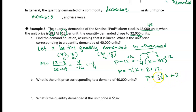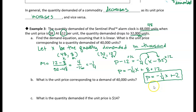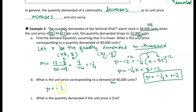That's our demand curve, which gives us the price for a given demand, or we can give it a price and figure out the demand. The next question asks for the unit price corresponding to 40,000 units. So I substitute x = 40 (in thousands) into the equation: P equals negative one-fourth times 40 plus 20.